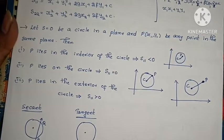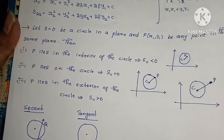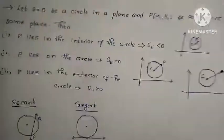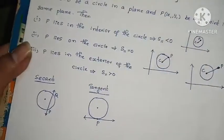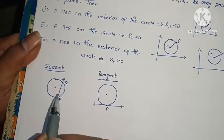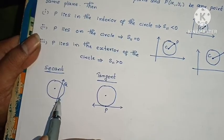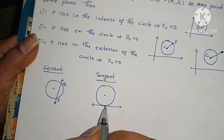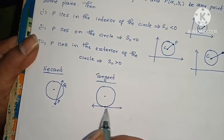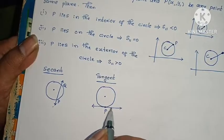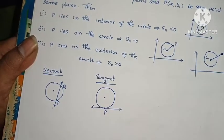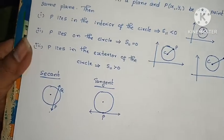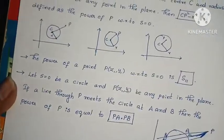Next, secant and tangent. A secant is a straight line that cuts the circle at two points. A tangent is a straight line that touches the circle at one point, or a line that moves touching at one point.